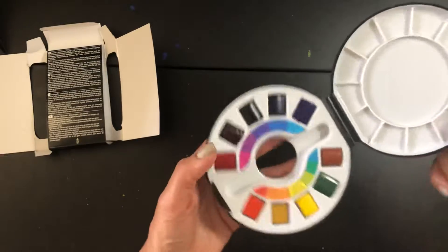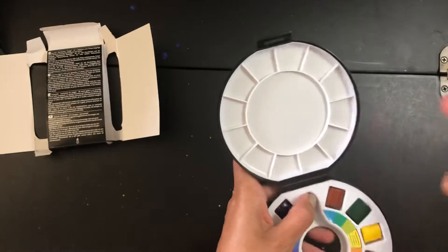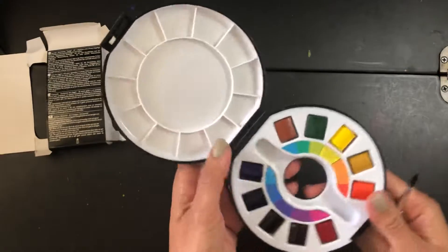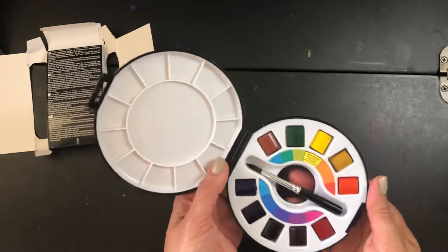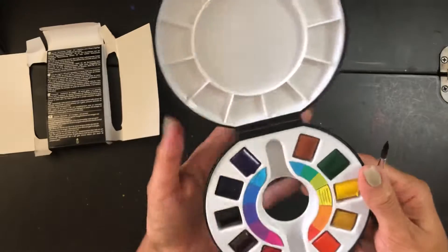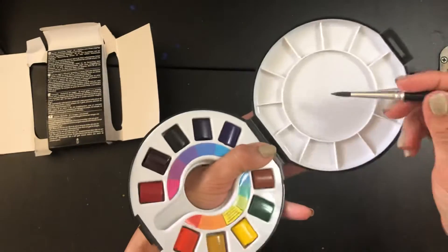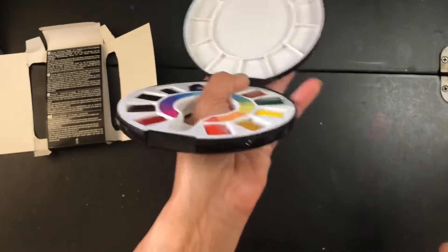There you go. And then you have the mixing space here. This is plastic, by the way, because it may look like porcelain, is plastic. Everything is plastic and the brush fits perfectly in the center. And I like it that you can hold it like this to paint.